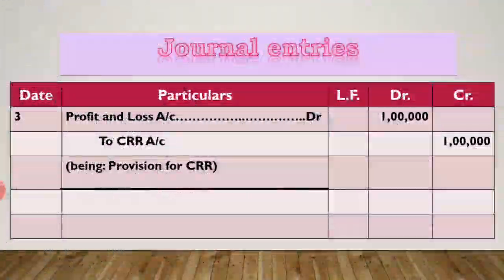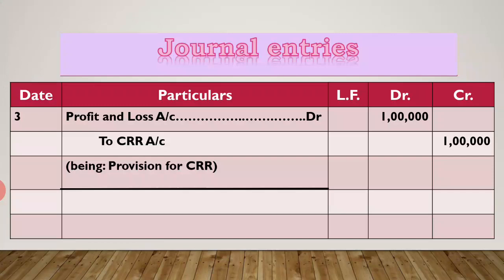Now the third entry: provision only for 1 lakh from issue of shares at par. Total provision to be made is 2 lakh because preference share capital is 2 lakh. So 1 lakh we transfer to CRR from P&L account. So here we write: profit and loss account debit 1 lakh to CRR account 1 lakh. Being: provisions for CRR.